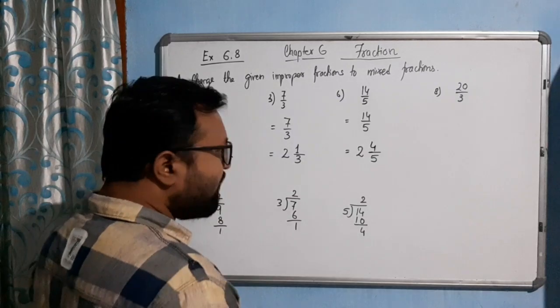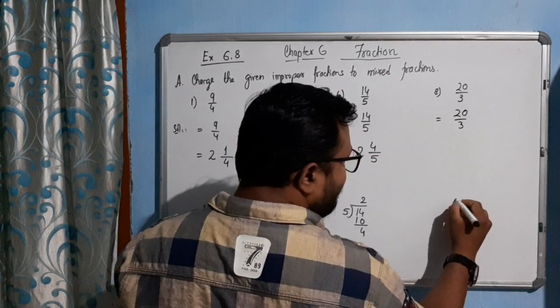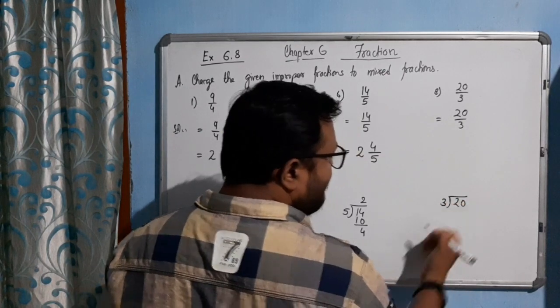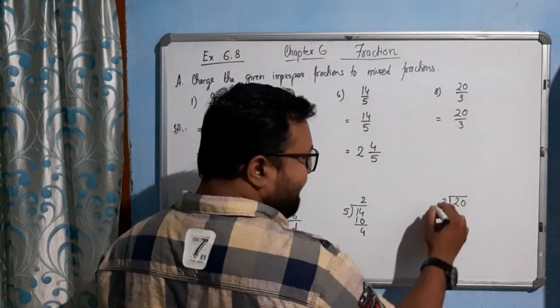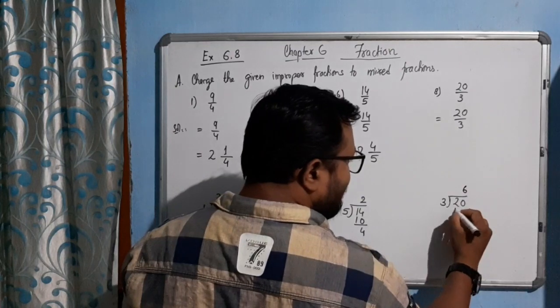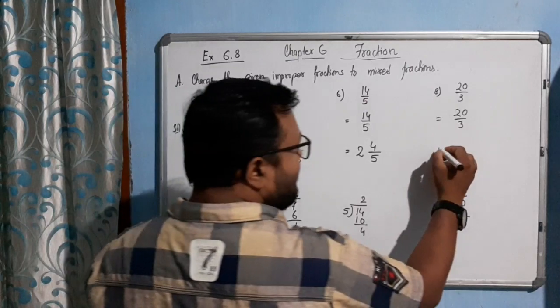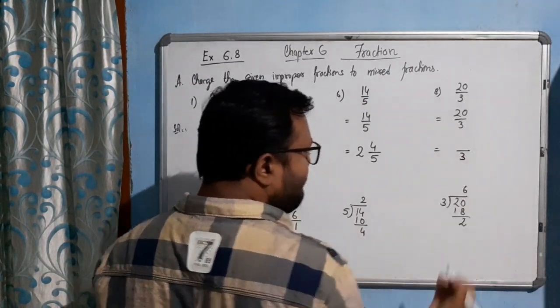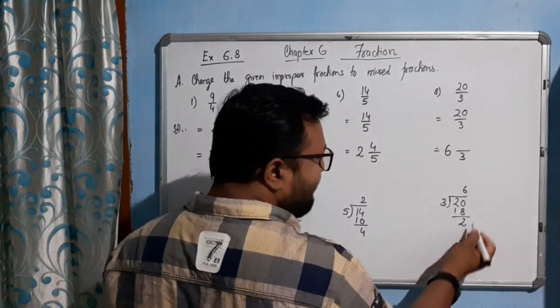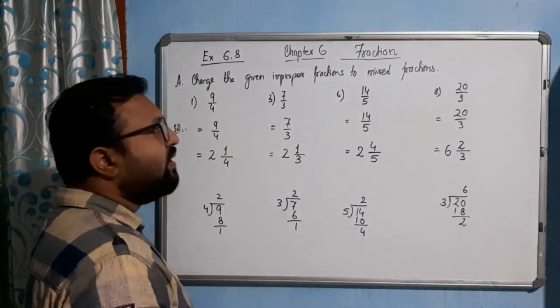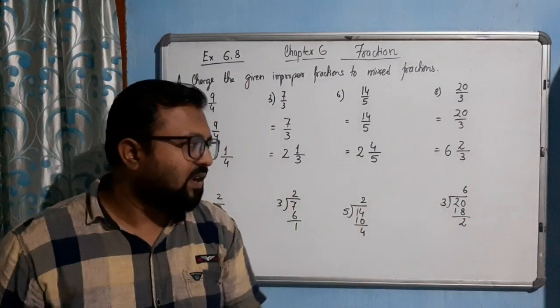Now come to the last one: 20 by 3. We will try to divide it. 20 by 3: 3 times 6 is 18, and 3 times 7 is 21, which will exceed. So 3 times 6 is 18. How much are you getting? 2 as a remainder. Once again, 3 is in the denominator, this quotient part will be our whole number, and the remainder of 2 will be our numerator. So 6 2/3. In this way we will convert our improper fraction to mixed fraction. I hope you have understood.